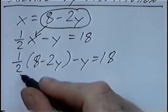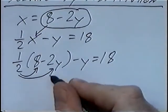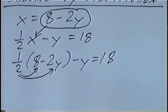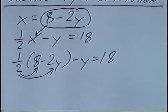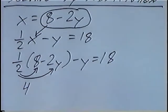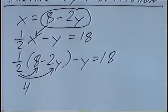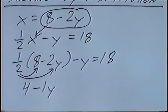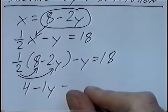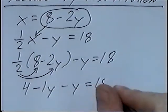The one half gets distributed to the parentheses. One half of 8 would be 4, and one half of negative 2 would be negative 1, or negative 1y. Minus y equals 18.